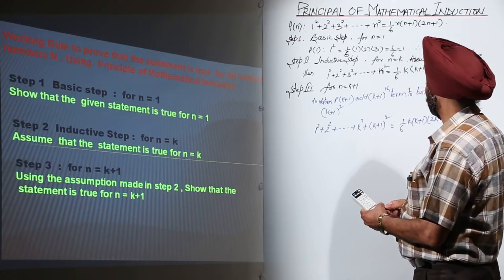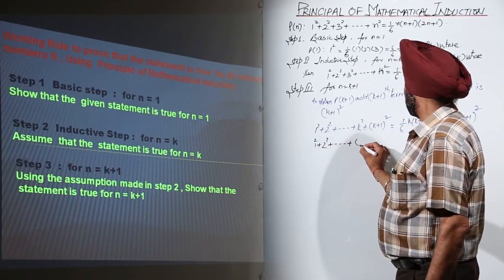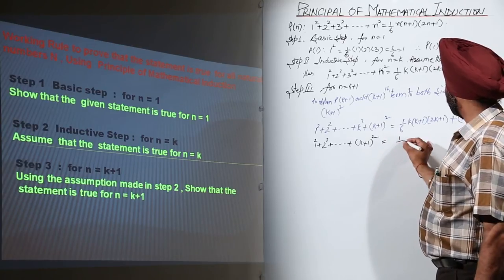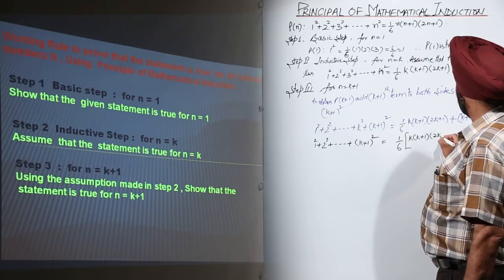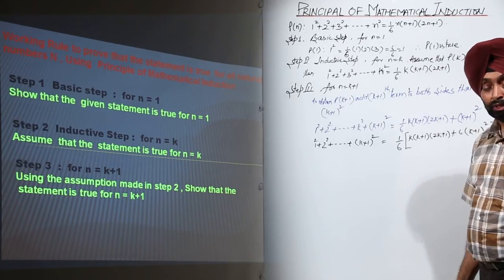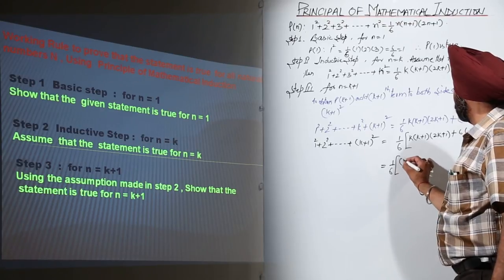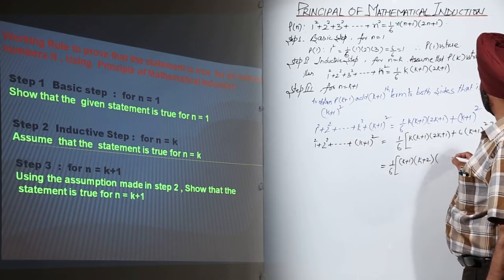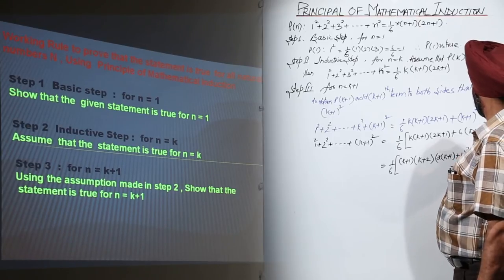This side becomes 1 squared plus 2 squared plus ... plus (k+1) whole squared. Solving the right-hand side gives (1/6)[k(k+1)(2k+1) + 6(k+1)²], which simplifies to (1/6)(k+1)(k+2)(2k+3).